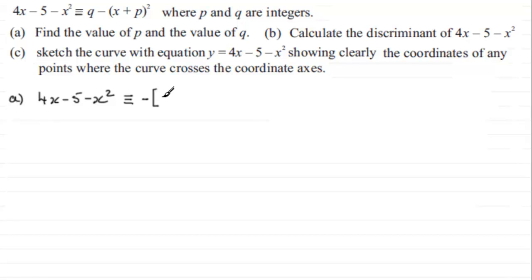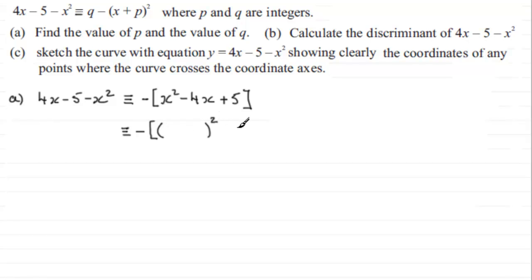We put it in descending powers: x squared, and then we have plus 4x, but I need to write minus 4x so we get minus times minus 4x, making it plus, and then minus 5 becomes plus 5. Now that we've got it in this format, we do the normal completing the square: set up a curved bracket squared, put x inside, take half the coefficient of x — which is minus 4, halved to give minus 2. Squaring that bracket out gives x squared minus 4x plus 4.